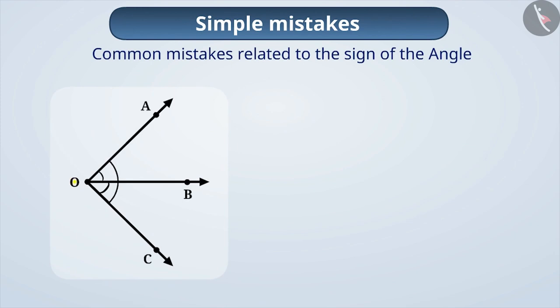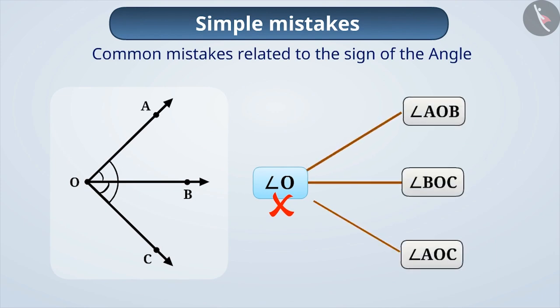If more than two rays have the same common point, then it is wrong to name it with just one letter. We will not be able to show correctly which angle is being named.